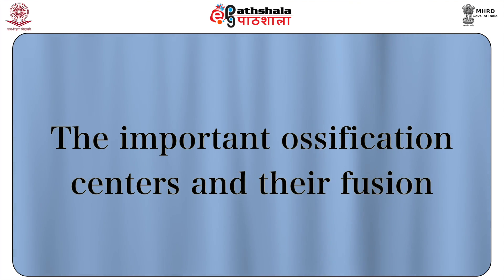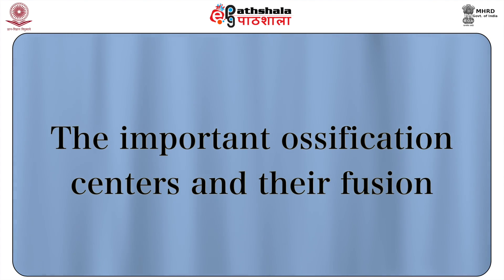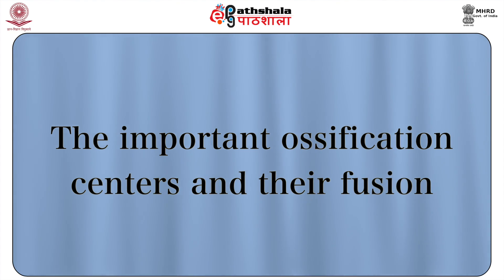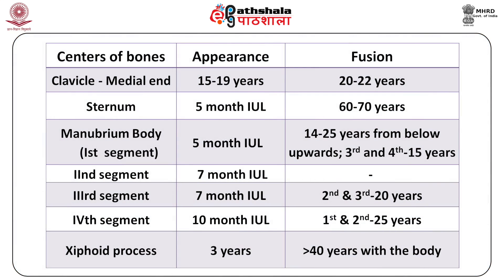Now let us see the important ossification centers, their appearance in the body, and their fusion. For the medial end of the clavicle, the center of ossification appears at the age of 15 to 19 years — there is a variation gap of almost 4 years, so it may appear at 15 or as late as 19 years.